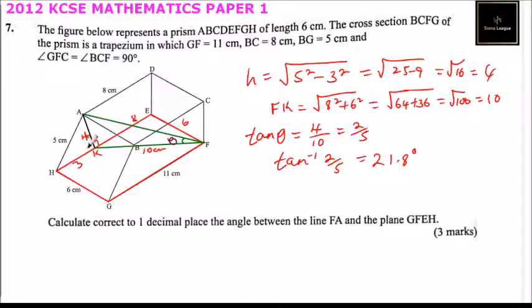So the angle between the plane GFEH and the line FA is the angle between FA and its projection on the plane.